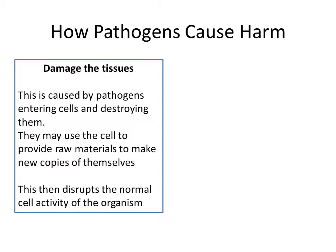Regarding damage to tissues: this is where pathogens get into the cells and destroy them. They quite often do this because they use the cell's apparatus to make more of themselves and to use the materials to build copies of themselves, which disrupts the normal activity of the cell. The cell itself is then broken up, and in the breaking-up process it can release a lot of toxic material into the system. This is exactly what viruses do.